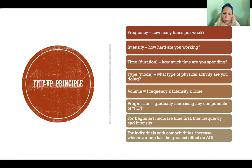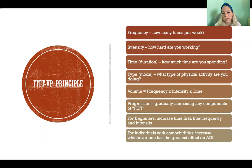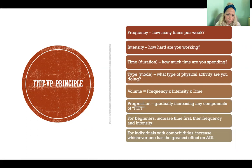Volume can be calculated by multiplying frequency times intensity times the time or duration, so we can numerically calculate the volume of exercise. When you think about that equation, you realize you can increase one variable and decrease the others and still come out with the same volume. So we can tweak those different variables to increase or decrease volume, or keep volume the same while changing the stimulus.